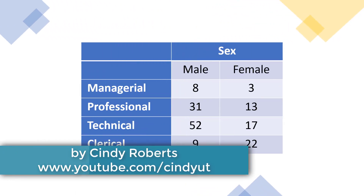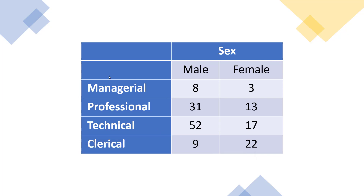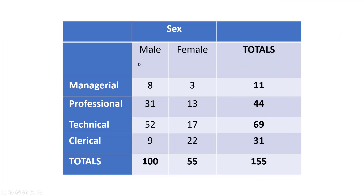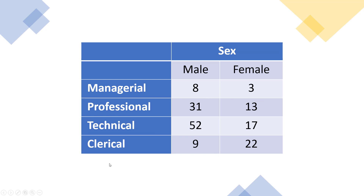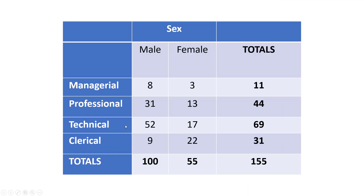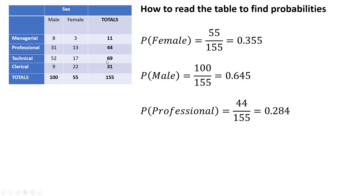A lot of times you just have table data and you want to figure out how to get probabilities out of it. The very first thing you should do is total your columns and your rows. All I did from the previous slide is add a total for my rows and a total for my columns. Based on this table data, we have males, females, and different job types — 155 people total.